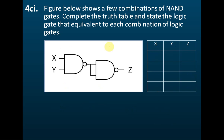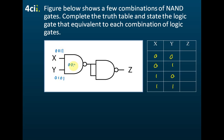How about this one? This one should be 4c2. The input is 0, 0, 1, 1 and 0, 1, 0, 1. For this AND gate: 0 AND 0 gives 0; 0 AND 1 gives 0; 1 AND 0 gives 0; 1 AND 1 gives 1. But because there's a NOT gate here, the output becomes 1, 1, 1, 0.